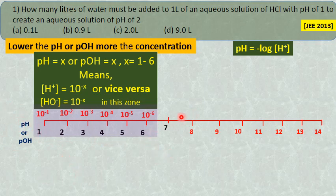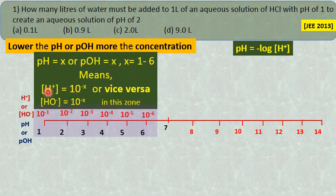If the pH value or POH value is between 1 to 6, then the hydrogen or hydroxyl ion concentration can be directly read. If pH value is x, or POH value is x, and x value is between 1 to 6, the hydrogen ion concentration is 10 raise to minus x moles. Or if POH is given, then hydroxyl ion concentration is 10 raise to minus x. For example, if the pH is 1, the hydrogen ion concentration is 10 raise to minus 1 mole. If POH is 1, then the hydroxyl ion concentration is 10 raise to minus 1.